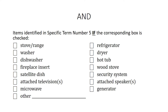Installed electrical fixtures is checked. Additional items included when the corresponding box is checked: stove/range, washer, dishwasher, fireplace insert, satellite dish, attached televisions, microwave, refrigerator, dryer, hot tub, wood stove, security system, attached speakers, generator, and other items that may be written in.